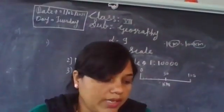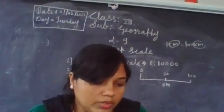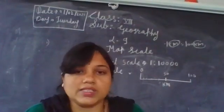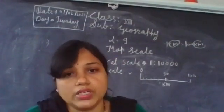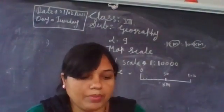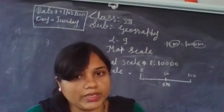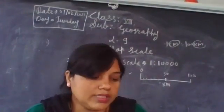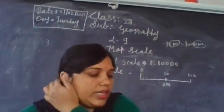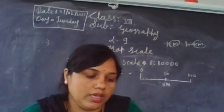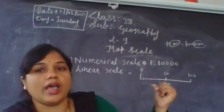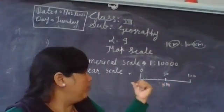Now, we understand the three kinds of map scale. First, verbal scale — in which words are used indicating measurement; for example, 1 centimeter is equal to 100 kilometers. Second, numerical scale — in which distances are expressed in the form of a ratio. Third, linear scale — in which distances are expressed by drawing a graphical scale, as shown on the blackboard.